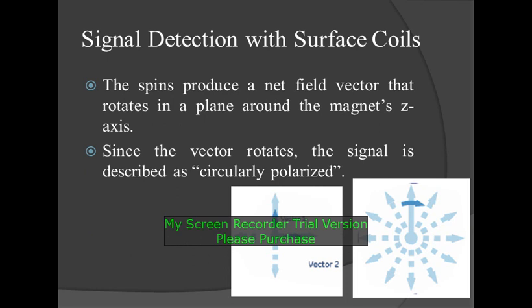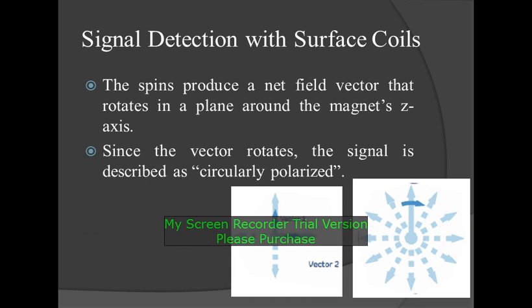Signal detection with surface coils: the spins produce a net field vector that rotates in a plane around the magnet's Z axis. Since the vector rotates, the signal is described as circularly polarized. The net field vector can be resolved into two orthogonal oscillating vectors and can be oriented in any direction in a plane orthogonal to the magnet's Z axis, as long as the two vectors remain orthogonal. When one vector is at maximum, the other is at minimum.